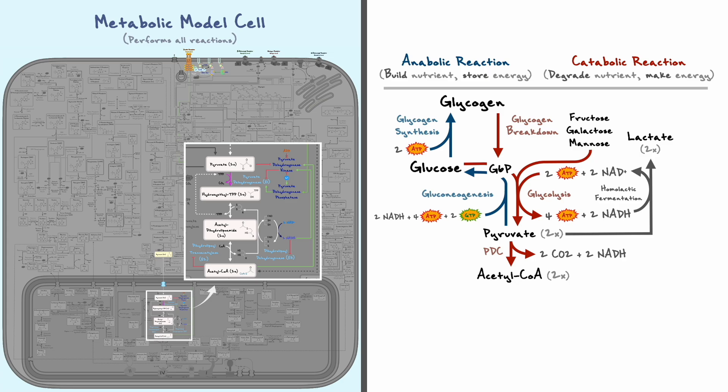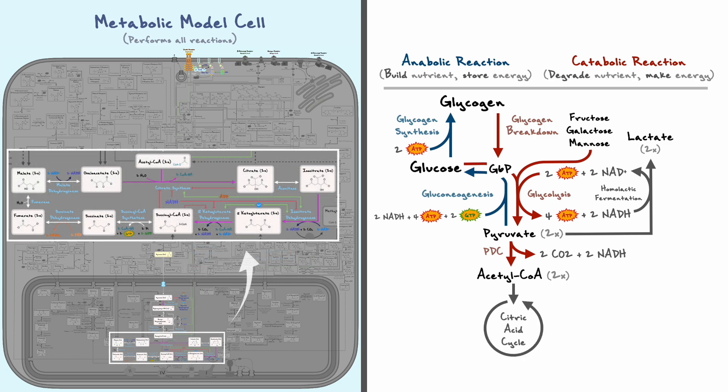This newly made acetyl-CoA can then be further degraded in a pathway called the citric acid cycle. As its name implies, the citric acid cycle is a cycle and one complete turn of this pathway is fueled by one acetyl-CoA. Each turn produces three NADH, one FADH2, two CO2 and one molecule of GTP. So again, if we consider the perspective of glucose, all those values will be doubled for two acetyl-CoAs.